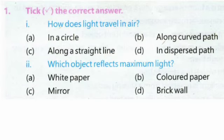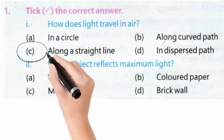How does light travel in air? (روشنی ہوا میں کیسے سفر کرتی ہے؟) Options: a) in a circle, b) along curved path, c) along straight line, d) in dispersed path. Correct option is C — along a straight line.